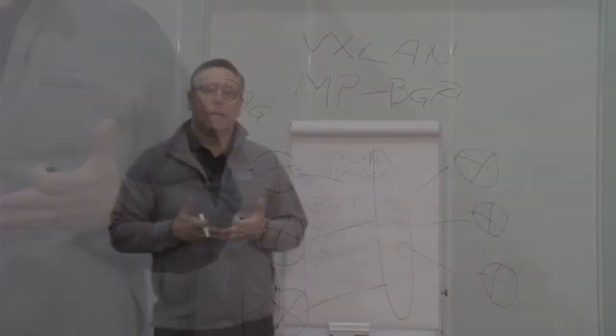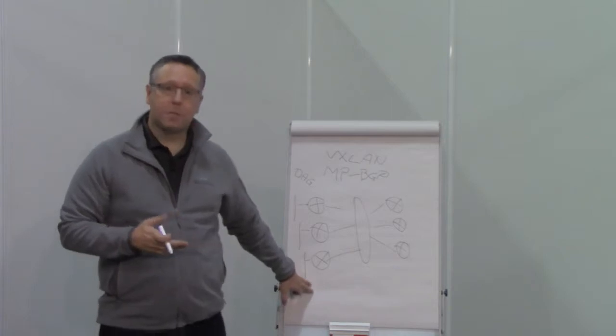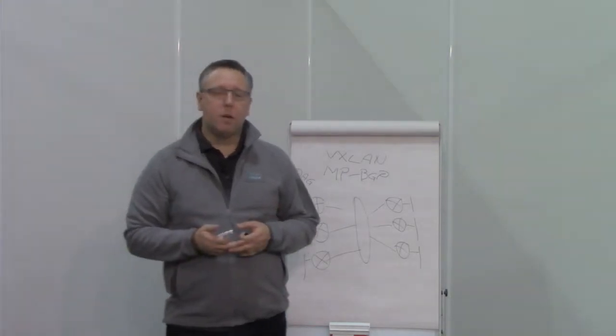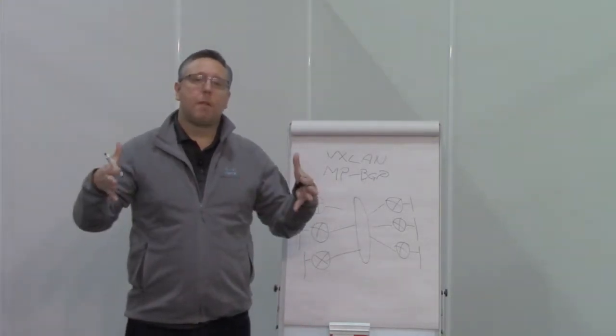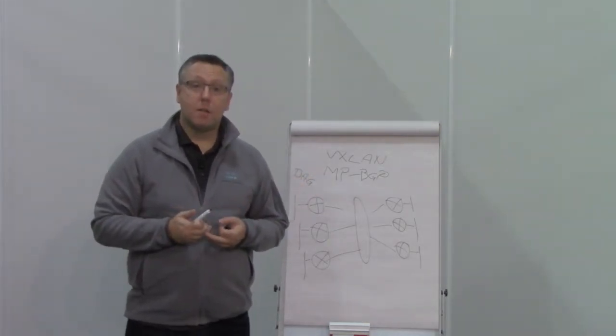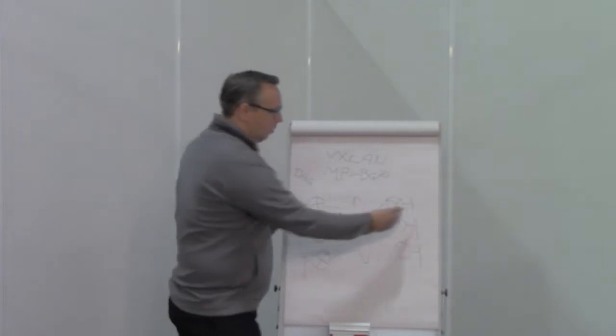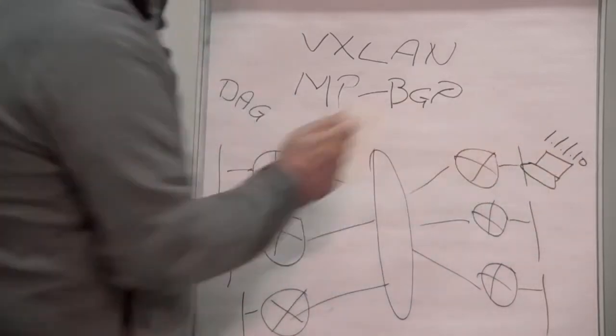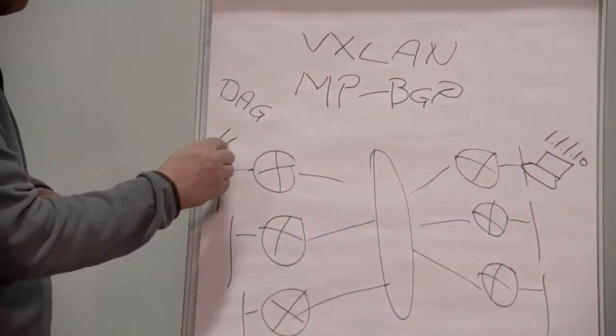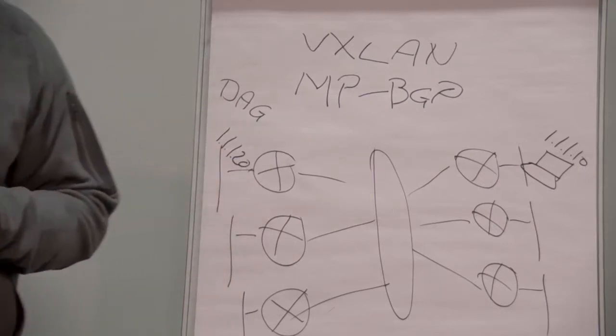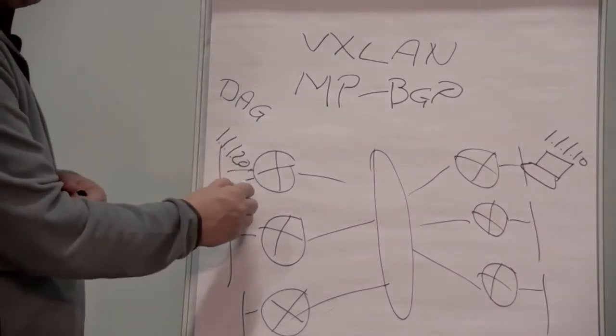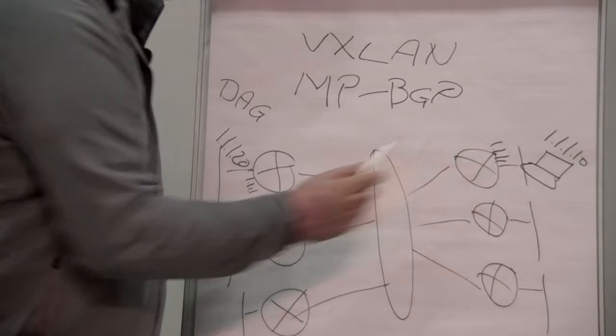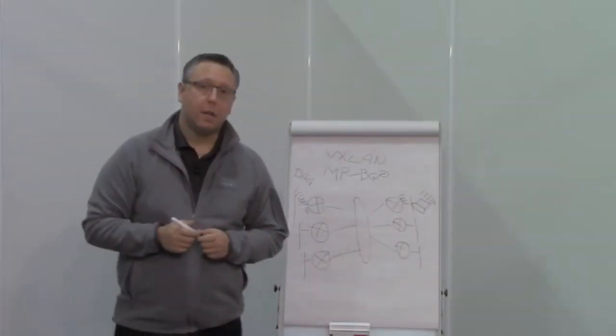With the distributed anycast gateway, we get first hops wherever we want them. We can have a default gateway existing on every switch, which means I can reduce the subnet routing approach we used with VRF lite or MPLS L3 VPN down to a host routing approach, where a given host—let's say 10.1.1.10—can be behind one switch and 10.1.1.20 from the same subnet can be behind another, both sharing the first hop gateway of 10.1.1.1 across the whole network.